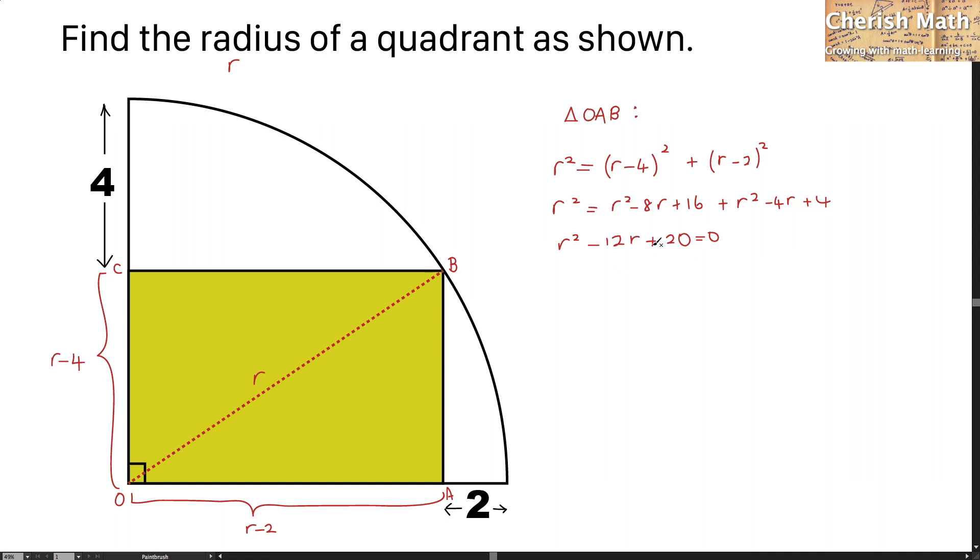Factoring: (r minus 10)(r minus 2) equals 0. So the values of r are 2 and 10.